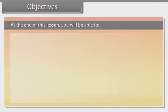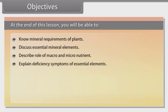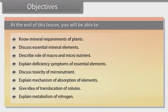Objectives. At the end of this lesson, you will be able to: know mineral requirements of plants, discuss essential mineral elements, describe the role of macro and micronutrients, explain deficiency symptoms and essential elements, discuss toxicity of micronutrients, explain the mechanism of absorption of elements, give an idea of translocation of solutes, and explain metabolism of nitrogen.